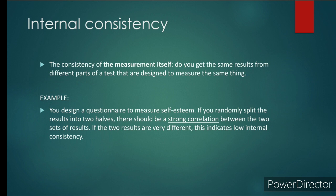Internal consistency is the consistency of the measure itself. Do you get the same result from different parts of a test that are designed to measure the same thing? You design a questionnaire to measure self-esteem. If you randomly split the results into two halves, there should be a strong correlation between the two sets of results. If the two results are very different, this indicates low internal consistency.